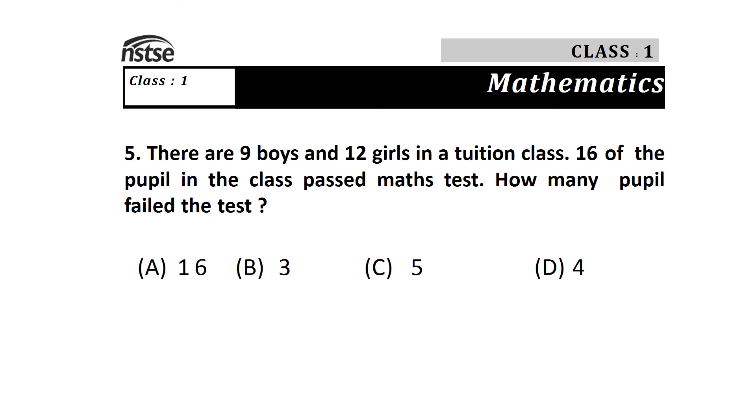Question 5: There are 9 boys and 12 girls in a tuition class. 16 of the pupils in the class passed the math test. How many pupils failed the test? Options are A) 16, B) 3, C) 5, and D) 4. We add the total number of students: 9 boys plus 12 girls equals 21 students. Then 21 minus 16 equals 5, so answer C) 5 pupils failed the test.